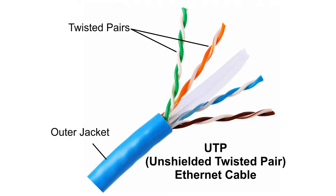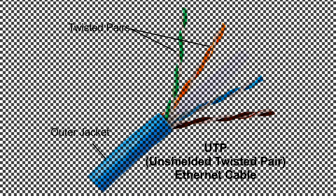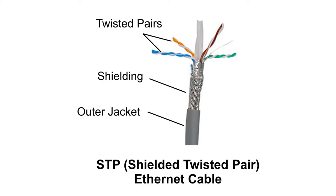Ethernet cable is classified into UTP cable, which is also called Unshielded Twisted Pair cable, and STP cable, that is Shielded Twisted Pair cable. As the name suggests, STP cable comes with shielding inside. Shielded ethernet cable should be used in higher electromagnetic interference environments in order to avoid data corruption.